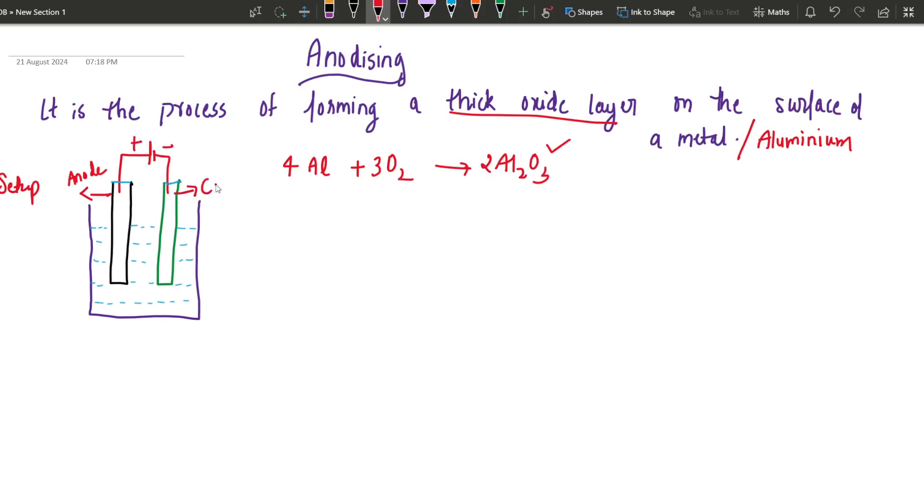And we need a cathode - you can take anything like steel, graphite, etc. And anode we are taking aluminum. This is our aluminum rod. So electricity is passed through this setup and a series of reactions can happen.